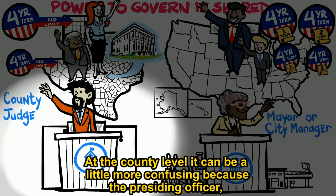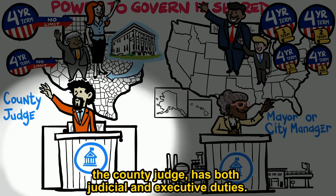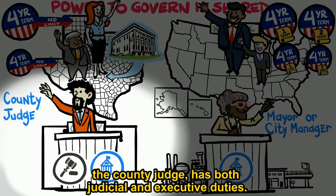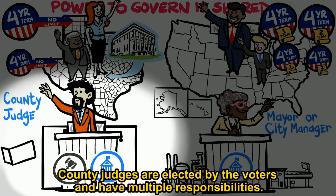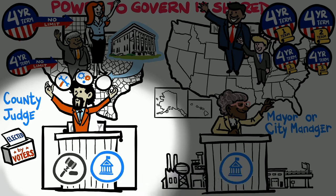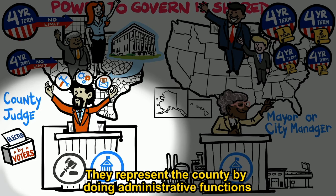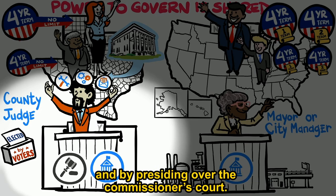At the county level, it can be a little more confusing because the presiding officer, the county judge, has both judicial and executive duties. County judges are elected by the voters and have multiple responsibilities. They represent the county by doing administrative functions and by presiding over the commissioner's court.